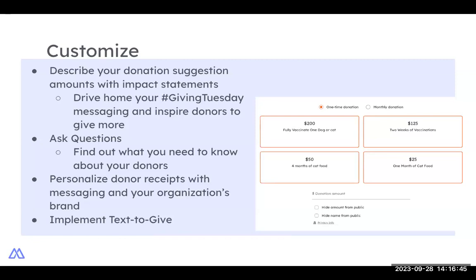Whether you're using the widget or the form, we definitely suggest adding impact statements that reflect your Giving Tuesday theme to each donation suggestion amount. With the advanced form, you can list as many donation suggestions and impact statements as you'd like, all showing on your website. The widget limits you to only four donation suggestions and four impact statements. The full donation form also allows you to add up to 10 customizable questions — you might not use all 10, but you have them available.